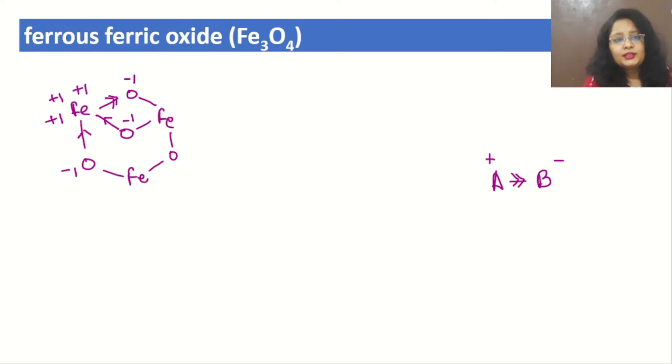So total, how many charges are there on iron? We can say this iron is having +3 because 3 times oxygen is taking the electron with the help of 3 bonds. In the same way here, 1 bond, 2 bonds, 3 bonds, so here also iron is having +3 charge.